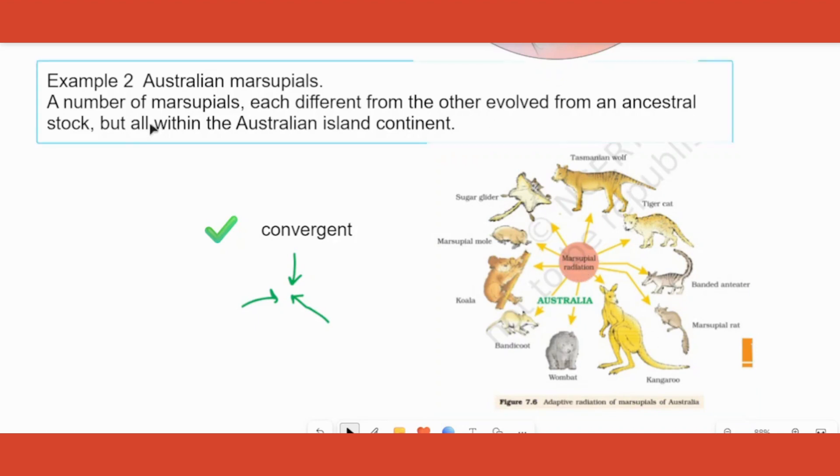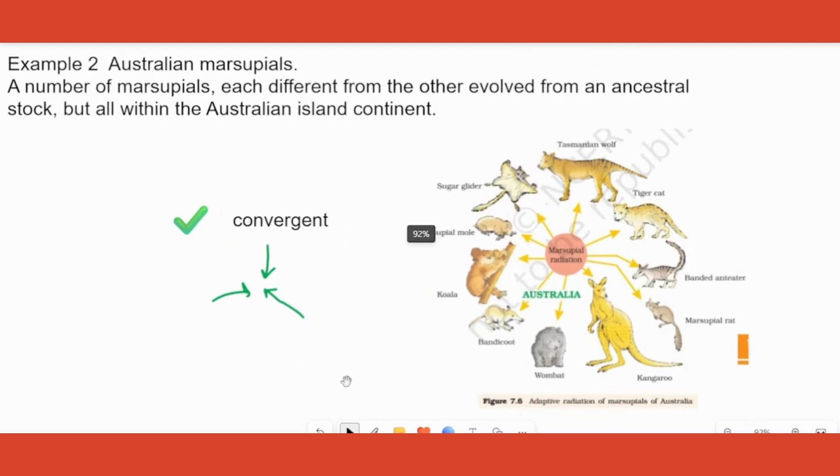all these evolved. Read this: a number of marsupials, each so different from each other, evolved from an ancestral stock, all within the continent. So there was no mixing up of genes, nothing. They all evolved depending on the need of food or habitat or whatever. That is called as adaptive radiation with respect to Australian marsupials.